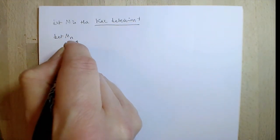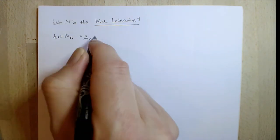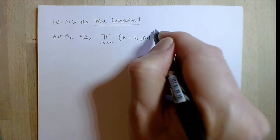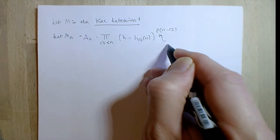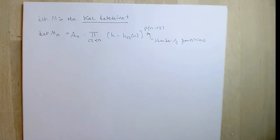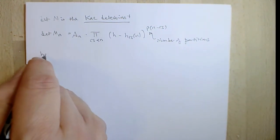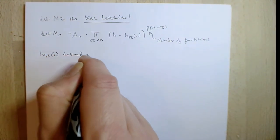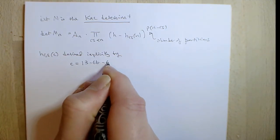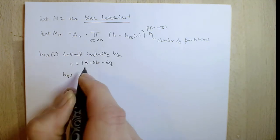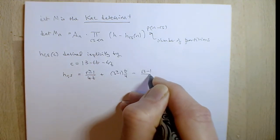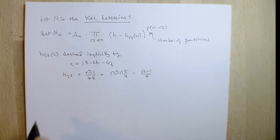There are clearly going to be problems when the determinant is zero, because that expression involves the determinant in the denominator and it will diverge. This determinant is the famous Kac determinant, known precisely: there's a constant times a product over factors written in terms of h equal to special values h_{rs}, with multiplicity given by the number of partitions. h_{rs} is defined implicitly by writing c in terms of t, and h_{rs} again in terms of t.